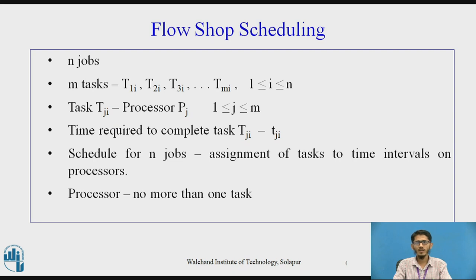For Flow Shop Scheduling, there are n number of jobs where every job consists of m number of tasks. That is, for a job i, we have tasks t1i, t2i, t3i up to tmi, where i ranges from 1 to n, and the task tji is to be performed on processor pj, where j lies between 1 to m.